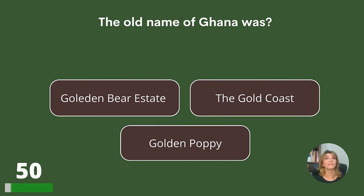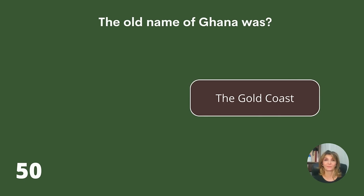The old name of Ghana was what? The Golden Bear Estate, the Gold Coast, or Golden Poppy? Answer: The Gold Coast.